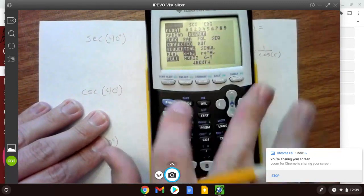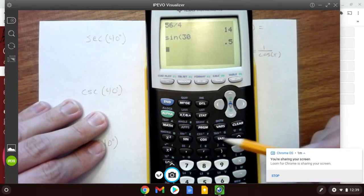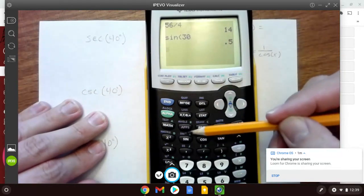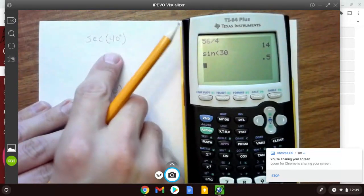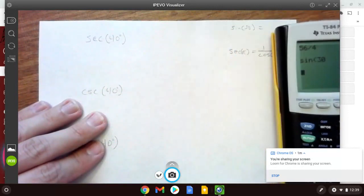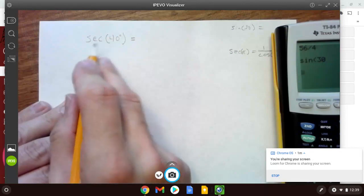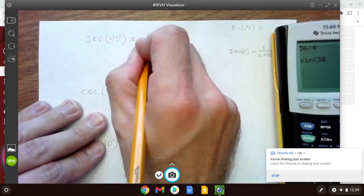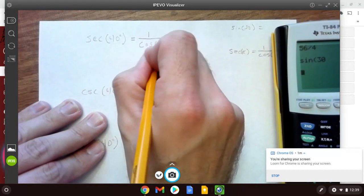Notice there's no secant, cosecant, or cotangent buttons on the calculator. If you want to evaluate secant of 40 degrees, you're going to think of it as 1 over the cosine of 40 degrees.